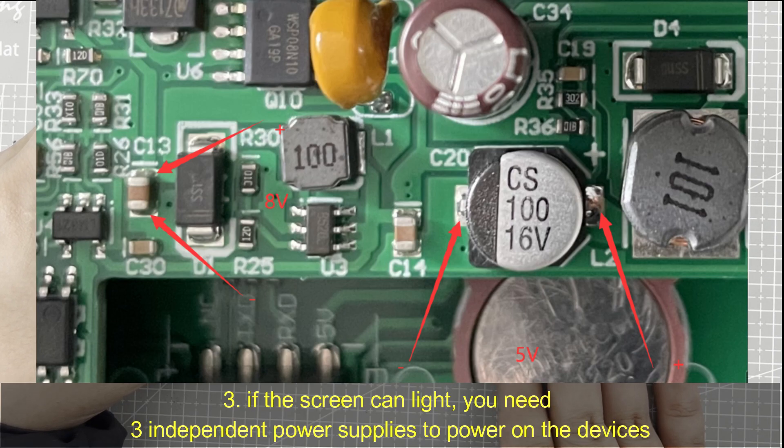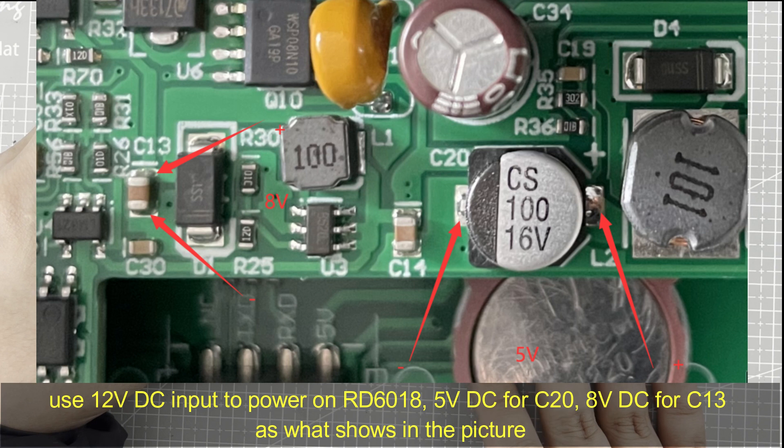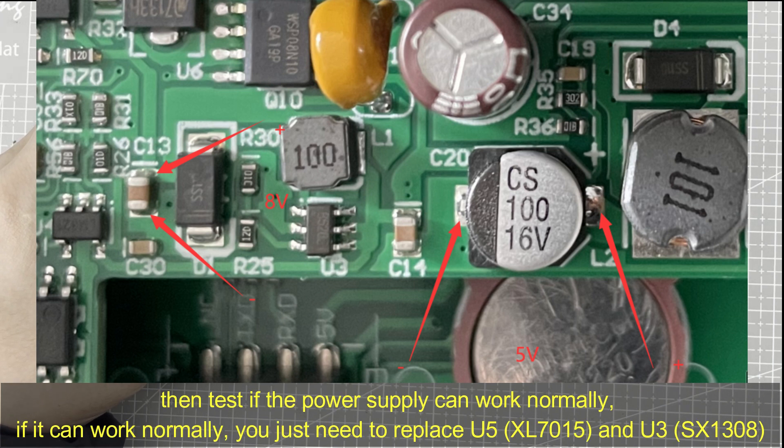Step 3, if the screen can light, you need 3 independent power supplies to power on the device. You use 12V to power on the RD 6018, 5V DC for C20, and 8V DC for C13, as what I showed in this picture. Then you need to test if the power supply can work normally under low power. If it can work normally, you just need to replace U5 and U3. And I will write the chips name on the screen.